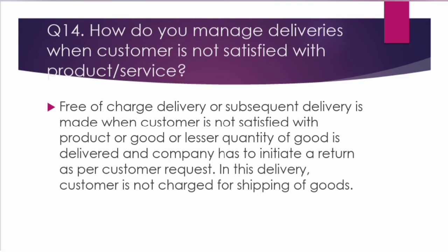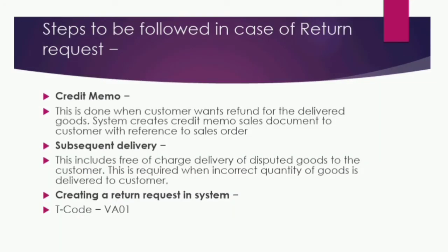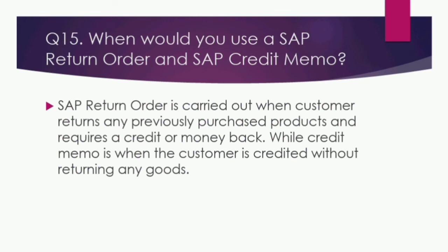The next question is: how do you manage deliveries when a customer is not satisfied with products or services? A free-of-charge or subsequent delivery is made when a customer is not satisfied or a lesser quantity of goods is delivered, and the company has to initiate a return per customer request — in this case, the customer is not charged for shipping. Steps include: first, a credit memo when the customer wants a refund for delivered goods; second, a subsequent free-of-charge delivery of disputed goods when an incorrect quantity was delivered, created using T-code VA01.